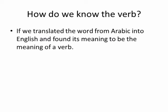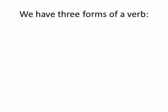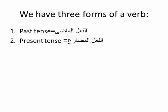Moving on to verbs: how do you know a verb? The same way — if you translate the word from Arabic into English and find its meaning is a verb, then it's a verb. In the Arabic language we have three forms of a verb: the past tense, called 'fi'l maadi'; the present tense, called 'fi'l mudaari'; and the imperative, called 'fi'l amr'.